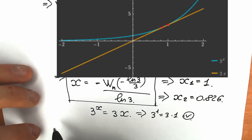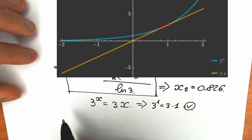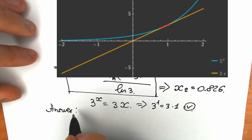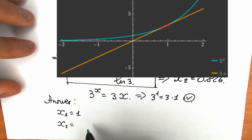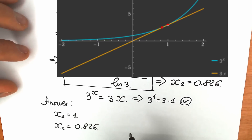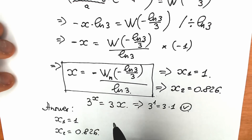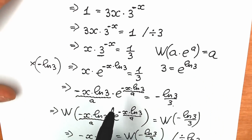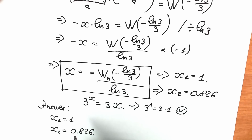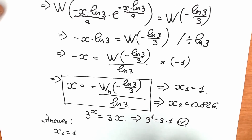So our final answers are x₁ equals 1 and x₂ equals 0.826. This is a very tricky question because many students make the common mistake of saying only x equals 1, solving by inspection. But when you know about the Lambert W function and these tricky moves, you can also find the second solution. It's really great to solve the question completely with all possible solutions — both x₁ and x₂.